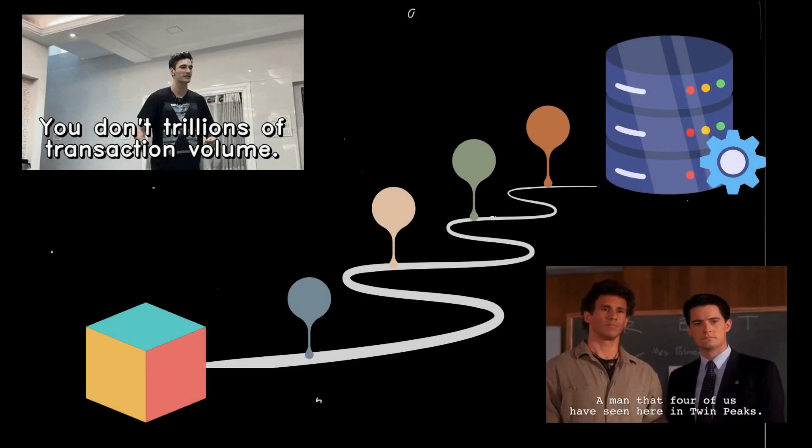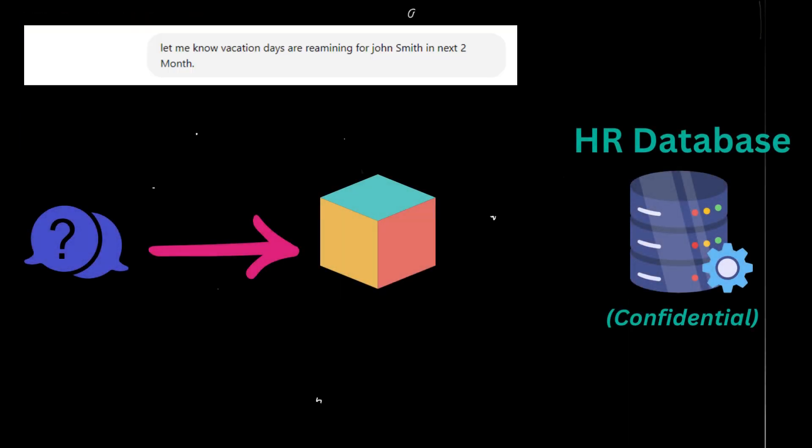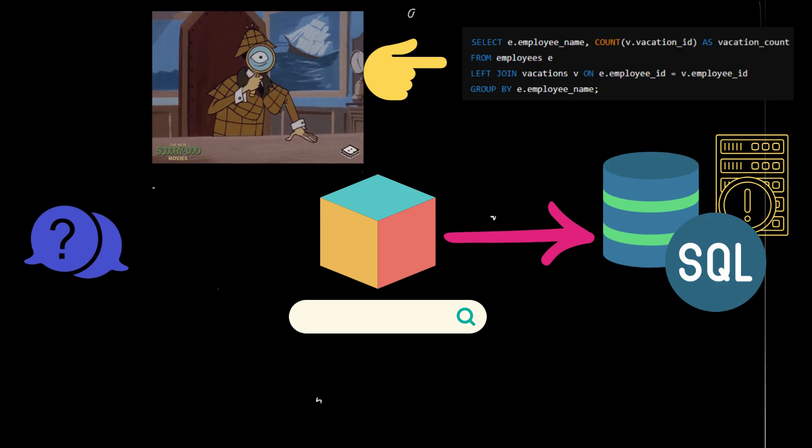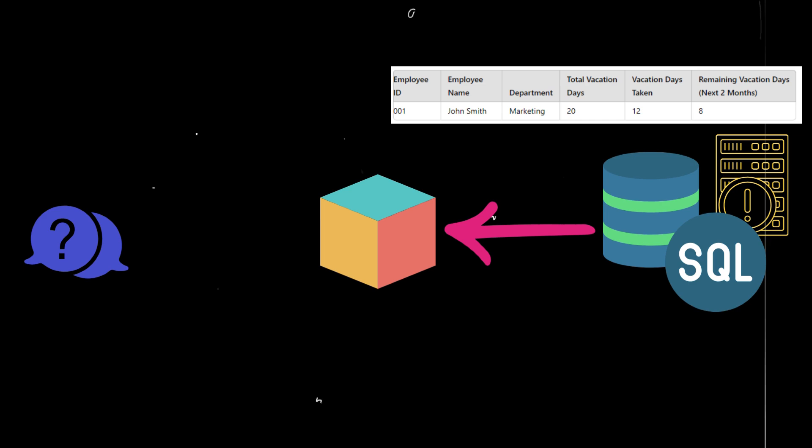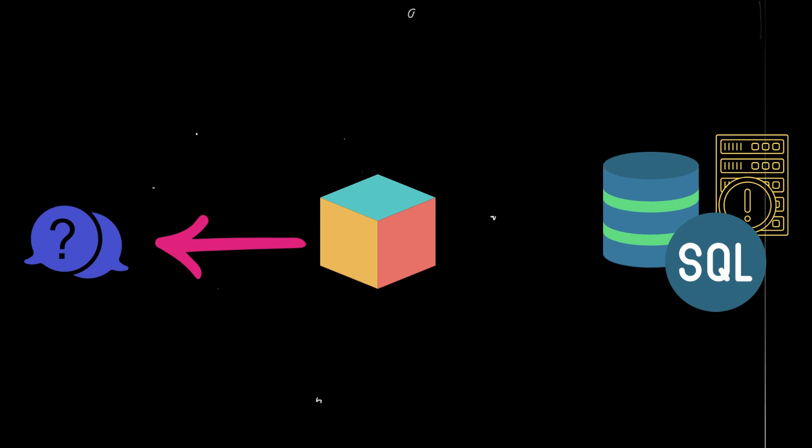If we were to design a system to solve this, I would have to give the model access to the database where my vacation data is stored. That same query would get fed into the language model. The difference now is the model would be prompted to create a search query that can go into the database. That would fetch the information from the database, output an answer, and then that would go back into the model that can generate a sentence. You have 10 days left in your vacation database. So the answer that I would get here would be correct.